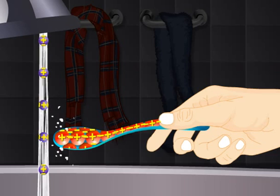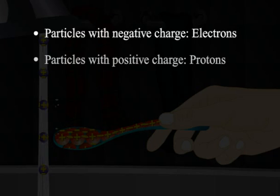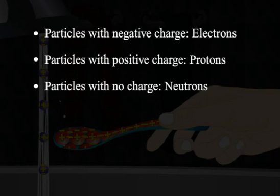These negative and positive charged particles were later named as the electrons and protons respectively. Together with them, there is one more particle that does not have any charge, and that is known as the neutron. All three of them are the subatomic particles and together form an atom.